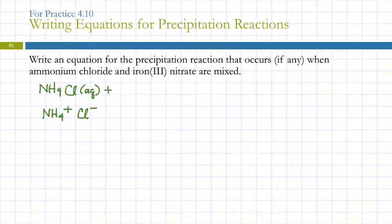The other reactant is iron(III) nitrate. So the iron(III) ion is Fe3+, that's what the Roman numeral tells us. Nitrate is NO3-, because we memorize it.